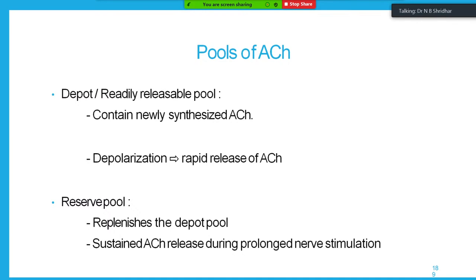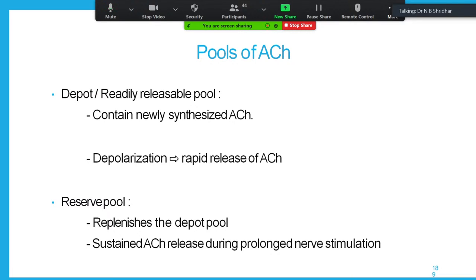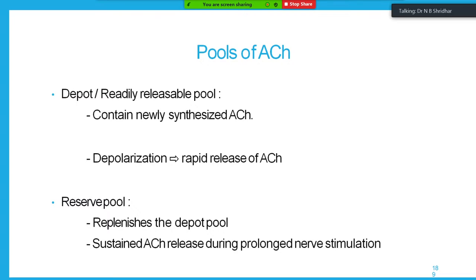There are pools of acetylcholine: the readily releasable pool contains newly synthesized acetylcholine; depolarization causes rapid release from this pool. The reserve pool replenishes the depot pool in the nerve endings and sustains acetylcholine release during prolonged nerve stimulation. Unlike norepinephrine, acetylcholine is not stored in any organ of the body. Norepinephrine is converted to epinephrine and stored in the adrenal gland to facilitate the fight-or-flight reflex.